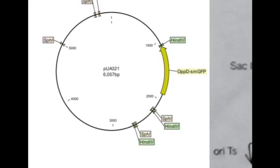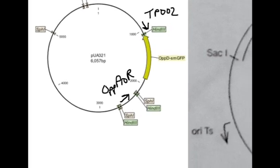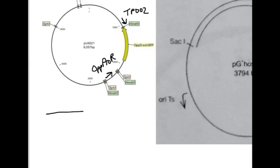The strategy, at least for the time being, I think is probably going to be the easiest: do PCR from PUA321 using primers that bind up here and here. This primer is called TP002 and this one is called OPPROR. If that PCR works, you end up with a linear piece of DNA that has everything in between those primer sites on it — so that's going to be the reporter gene, GFP.